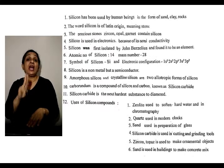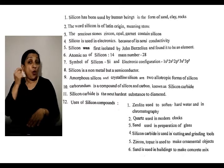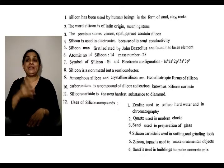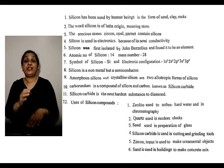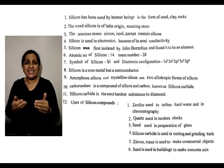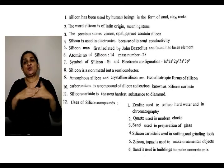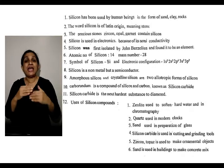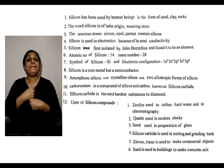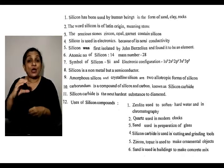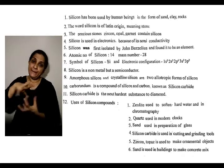Silicon carbide is used to make cutting and grinding tools. Silicon and topaz are used to make ornaments. Sand is also used to build and make concrete mix.